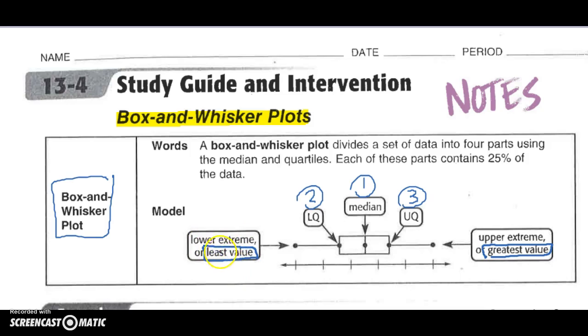We're just going to be gathering up our data. So for steps four and five, we're going to write the least number and the greatest number to make our box and whisker plot.